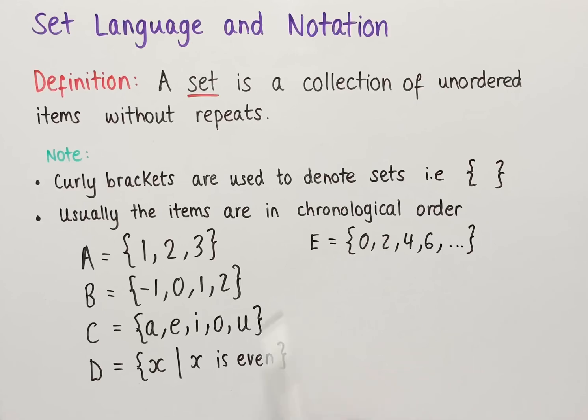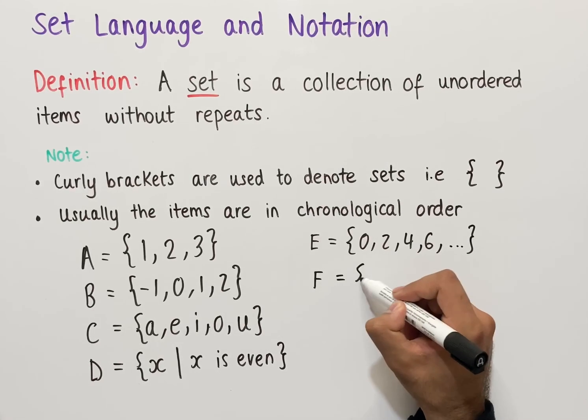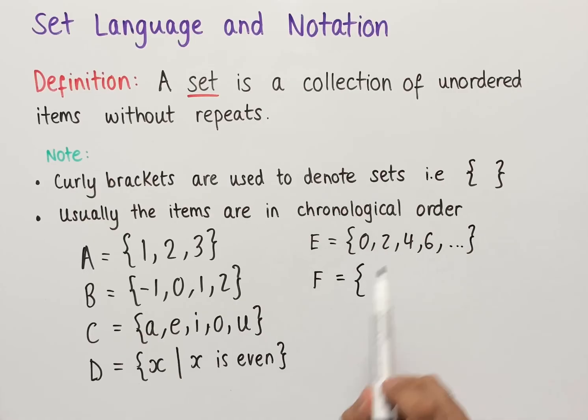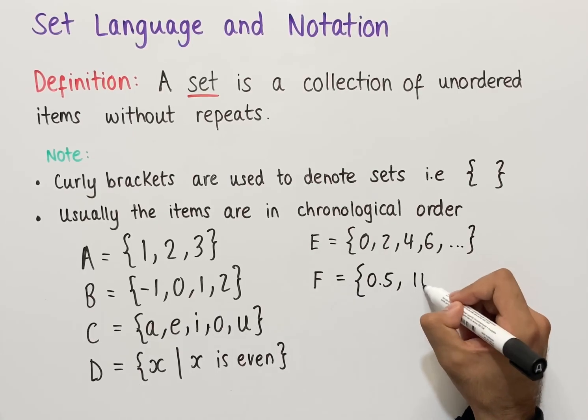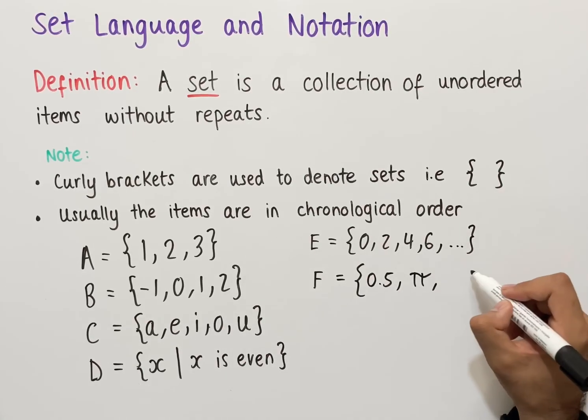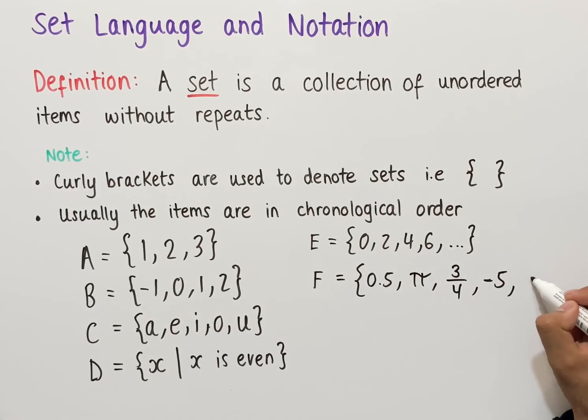This is the set of all the even numbers. We might also have a mixture of all of these, so we don't necessarily have to always have whole numbers. We can have decimals, fractions, symbols, and so on.